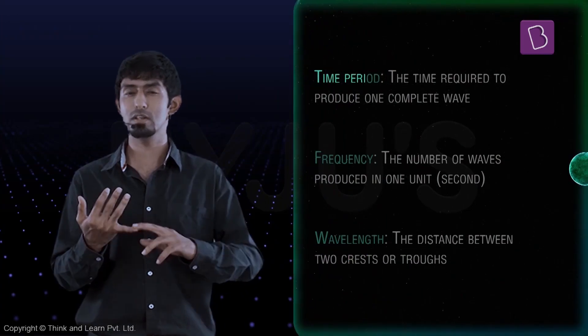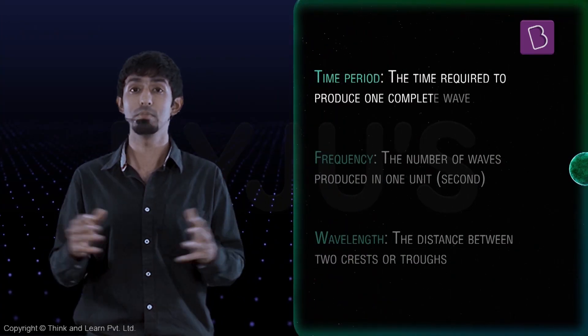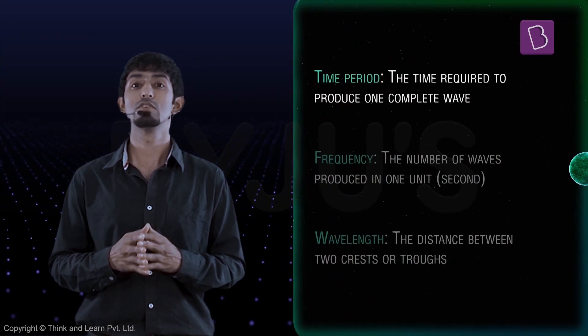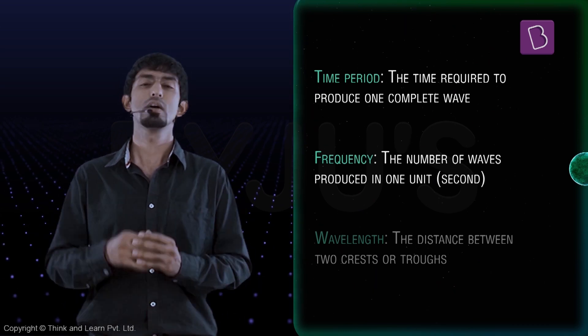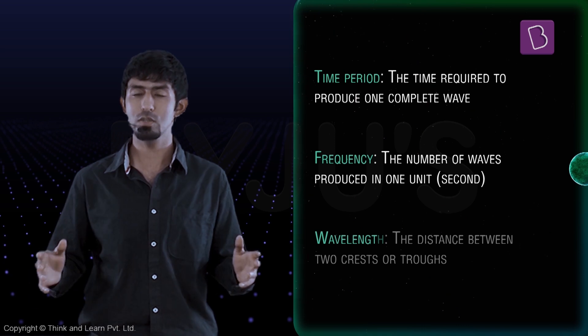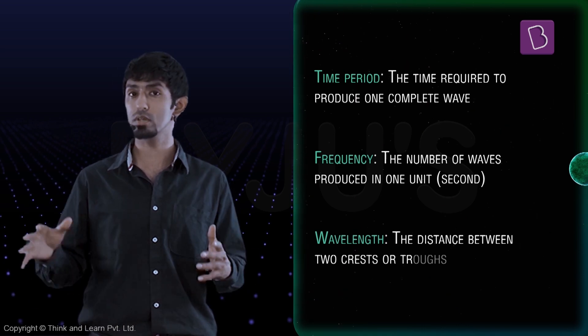So we've defined three quantities here: time period, the time one wave takes to complete; second, the frequency, which is the number of waves in a particular unit of time, usually a second; and wavelength, which is the distance between two crests or two troughs.